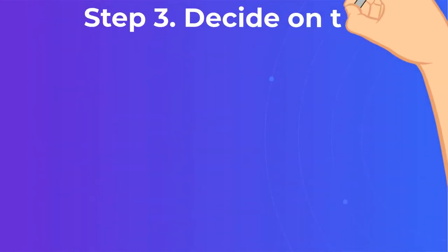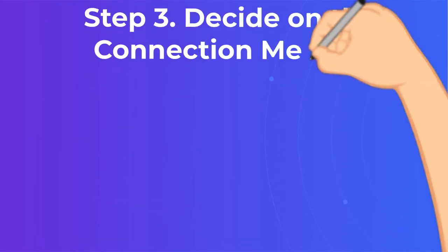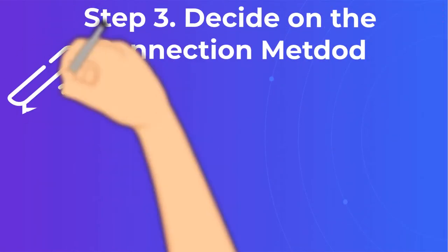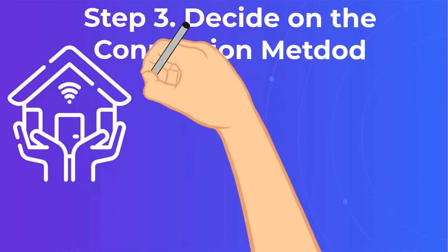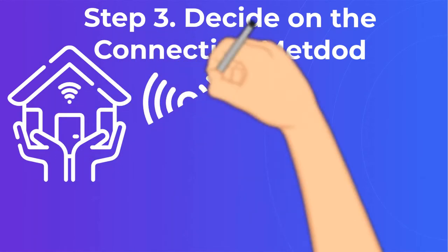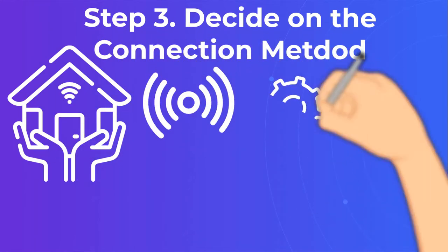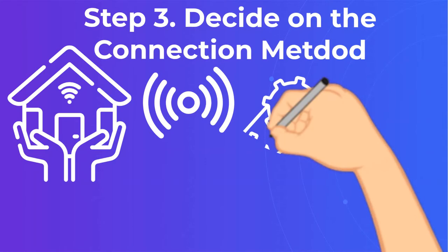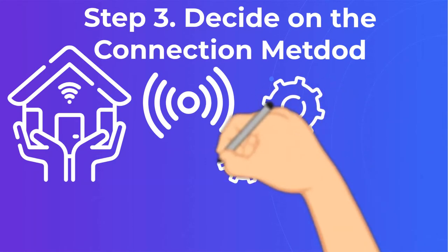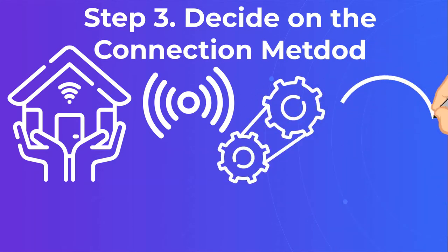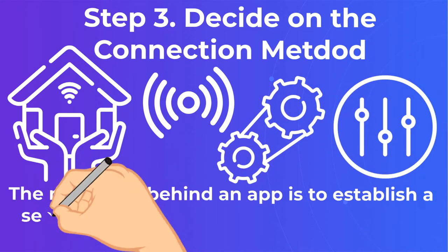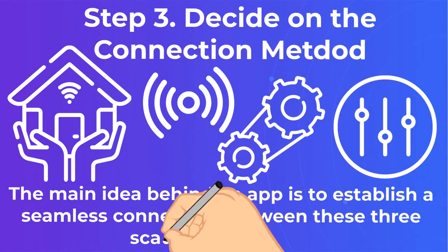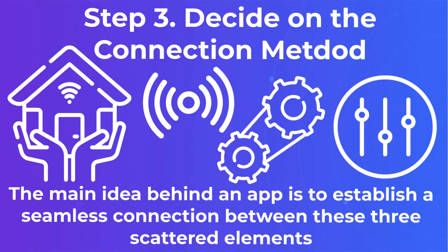Step 3: Decide on the Connection Method. We already established that when you make a smart home app, it tends to have three main elements: sensors, actuators, and controllers. The main idea behind an app is to establish a seamless connection between these three scattered elements.